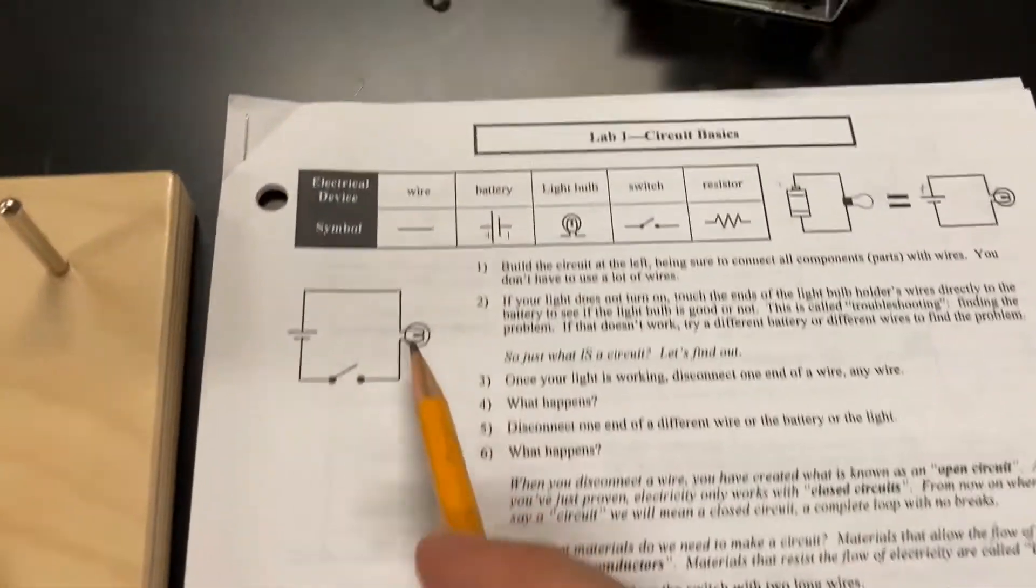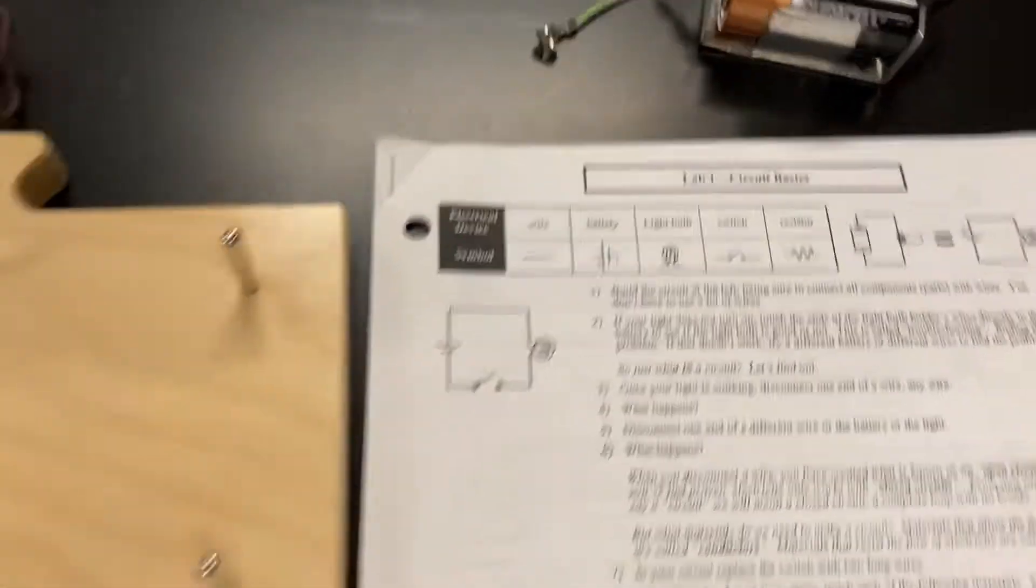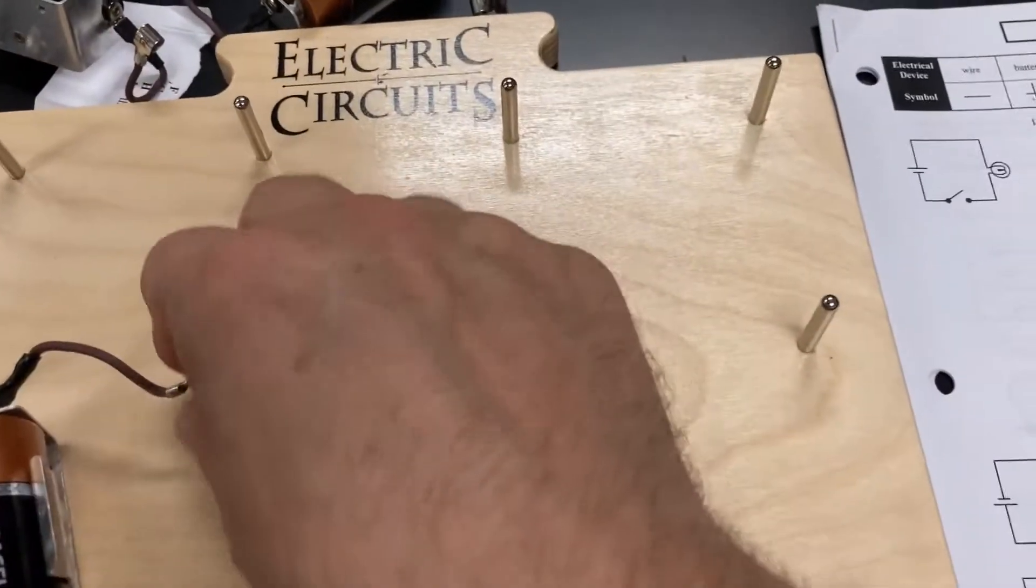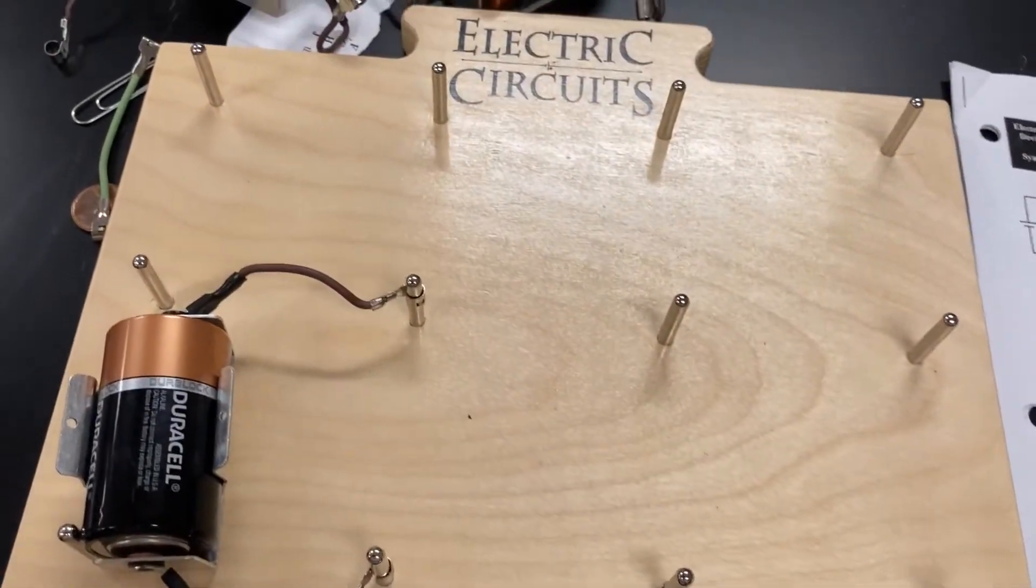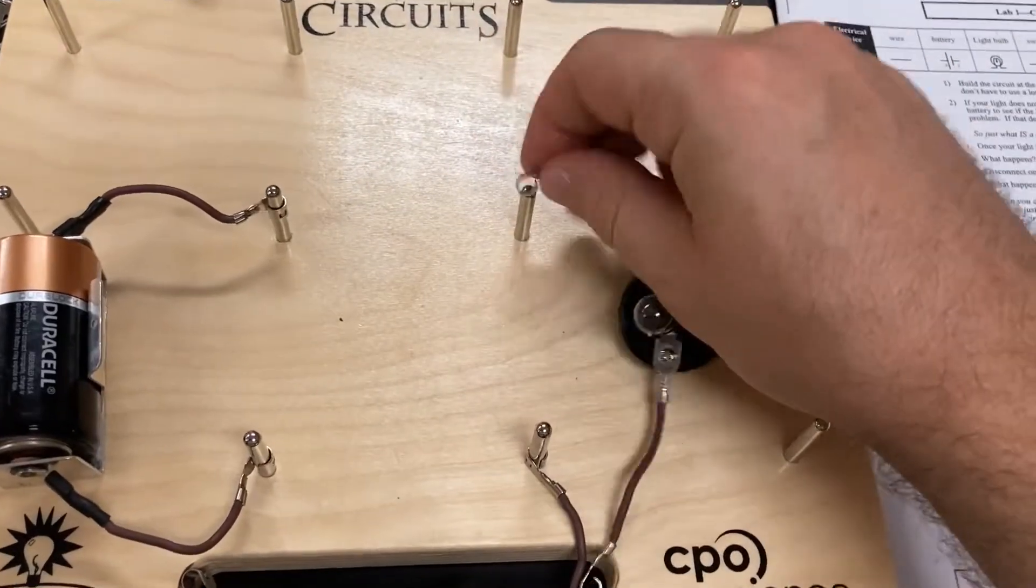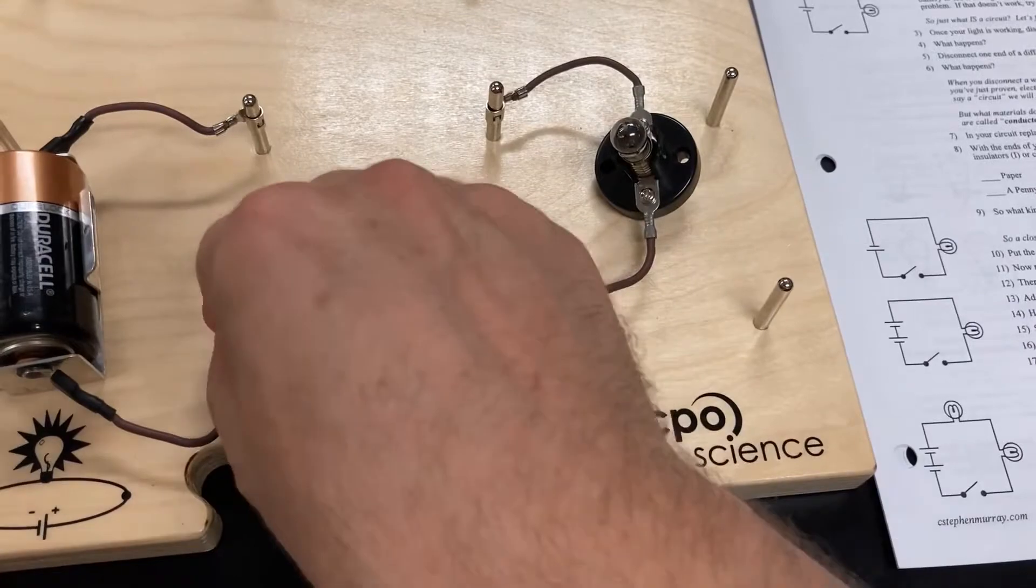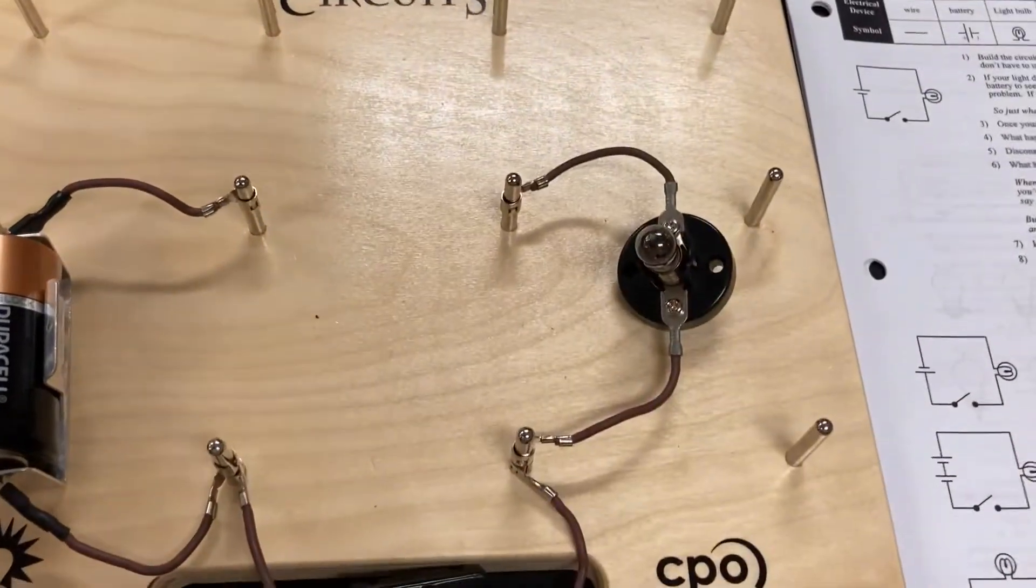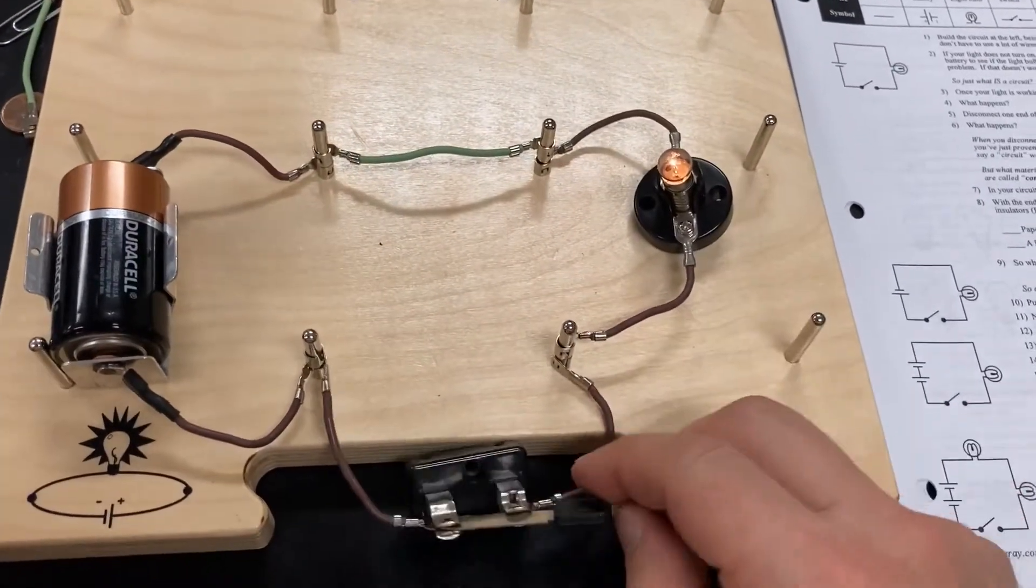So build the circuit at the left, which, of course, has a battery going that direction, a light bulb, and a switch. So we're going to put in a battery, a light bulb, and the switch, okay? And we're going to put a wire there. Don't have to. Those are wires as well. Here we go. So, oh, and it came on.